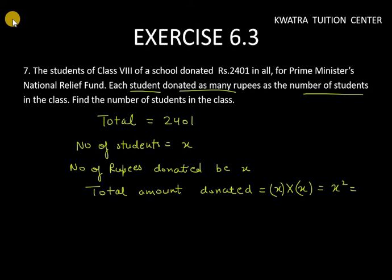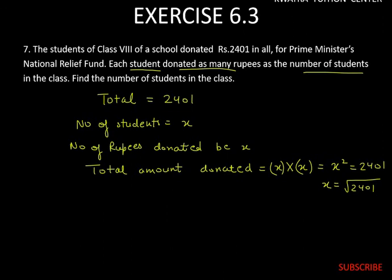This means the total amount donated equals x squared. And the total amount donated is ₹2,401. So when we move x squared to the other side, it becomes a square root. That means we have to find the square root of 2,401.